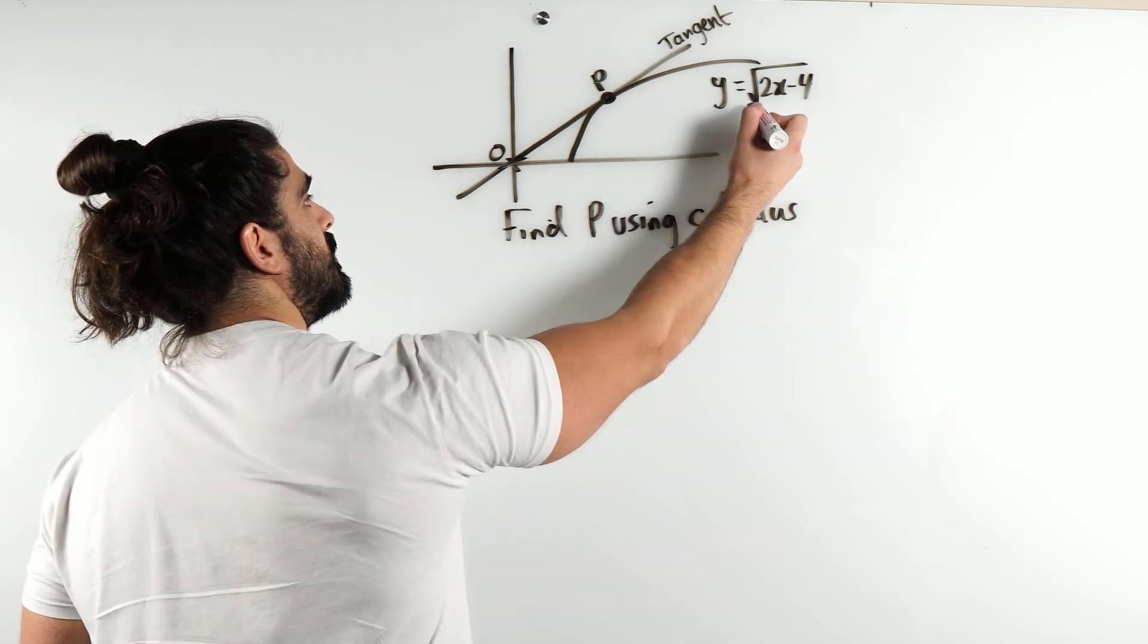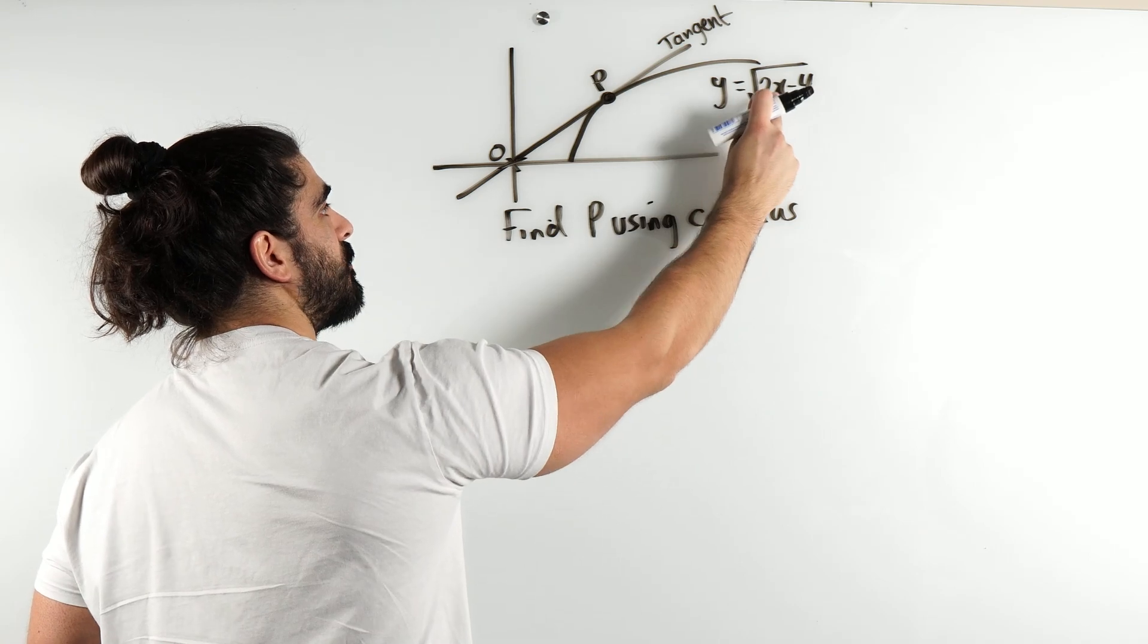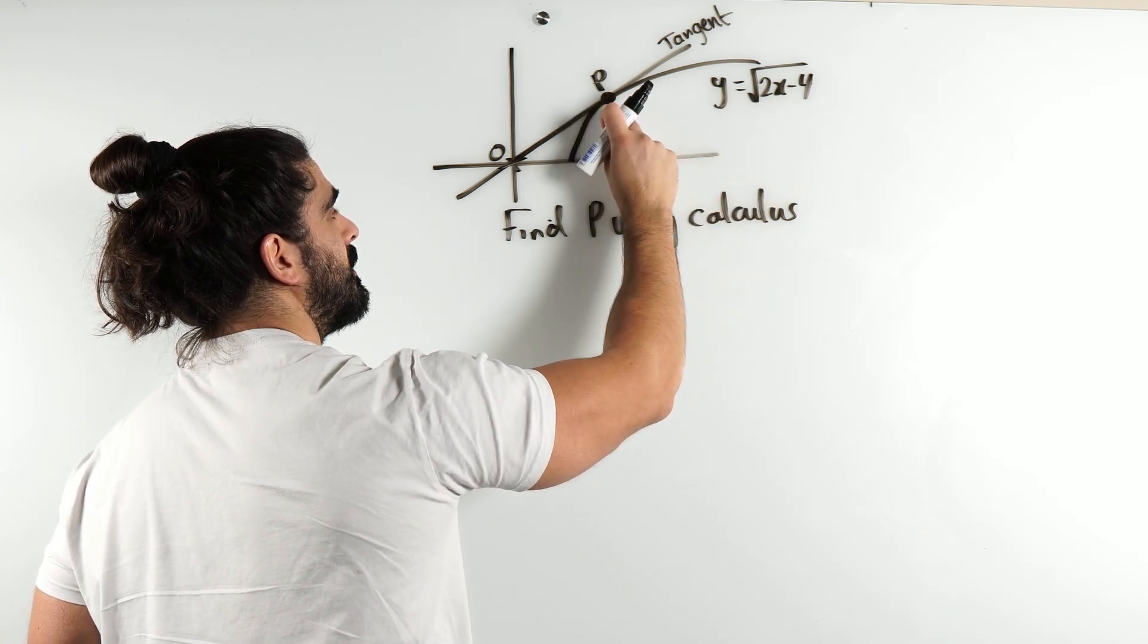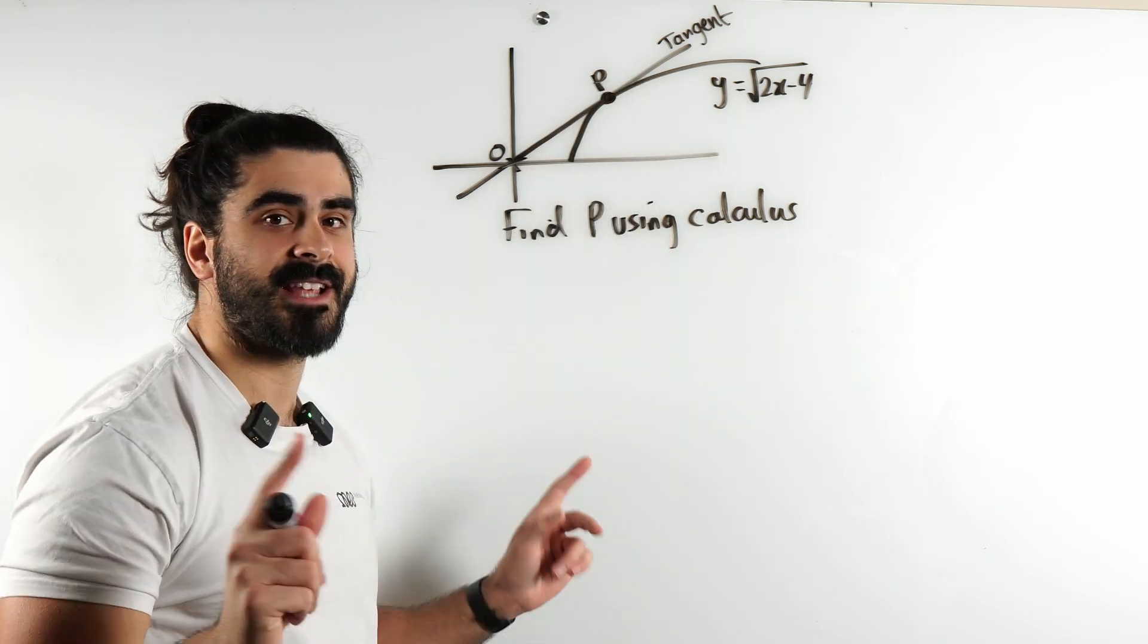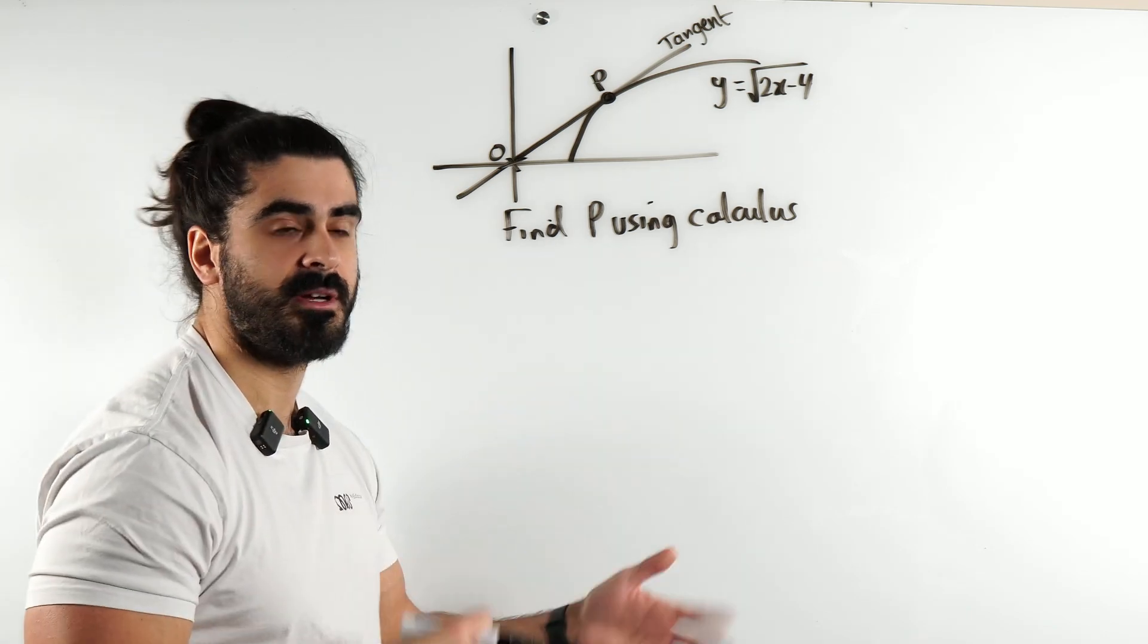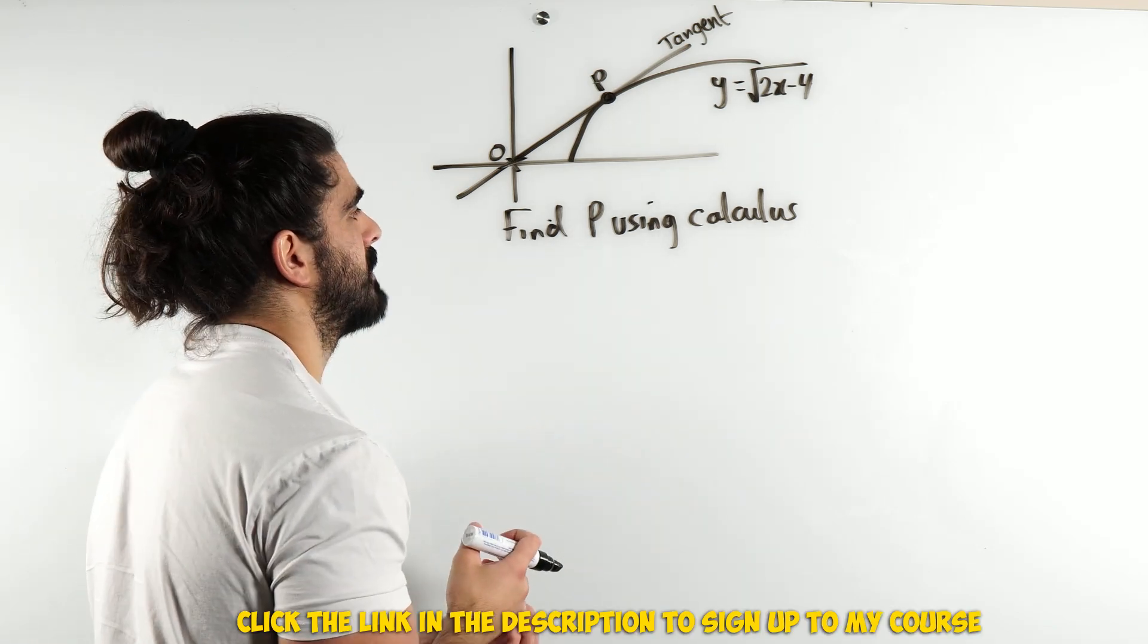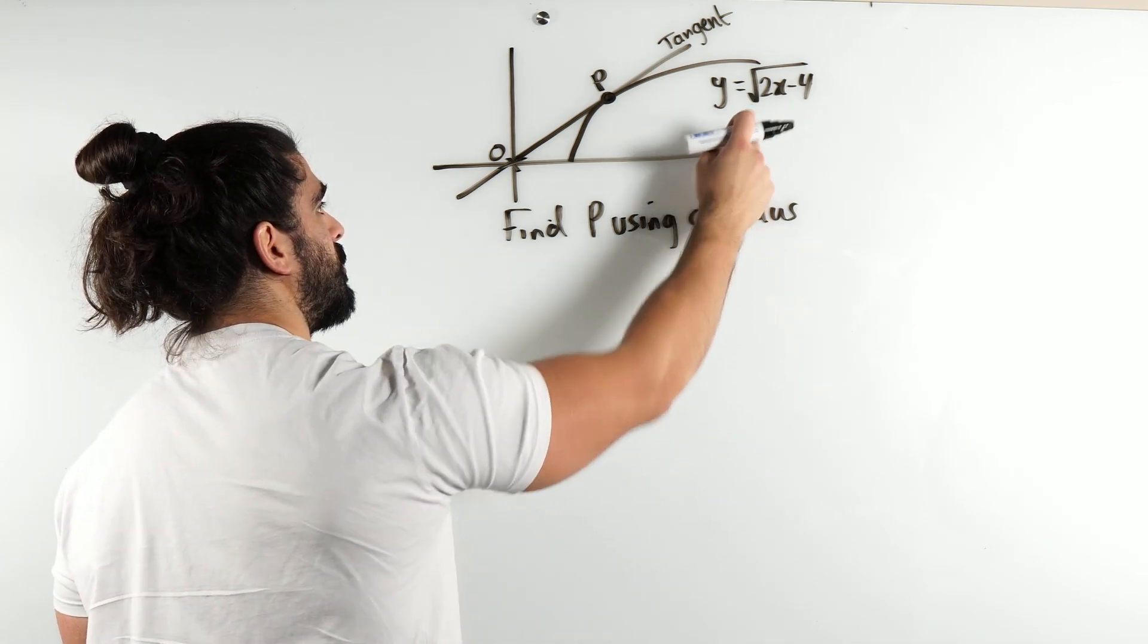So, what we're going to do is we're going to differentiate this and state that the gradient of this curve at point P is the same gradient as the tangent at P. Now, if they didn't say calculus, what you could do is label this as y equals mx, equate them, and then say that the discriminant is 0. But they want us to use calculus. So, we're going to differentiate this.